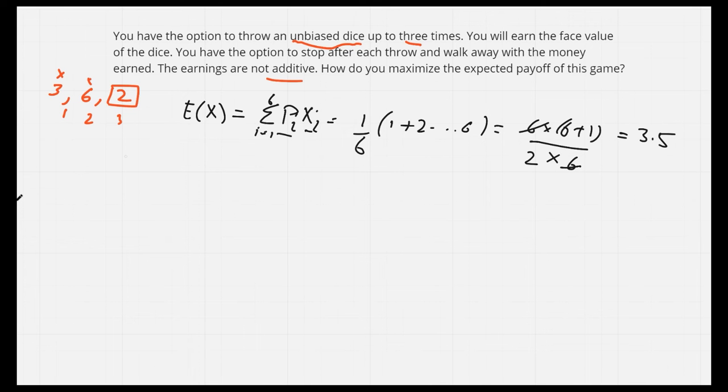Now we know the expected value for one throw. Let's say we have thrown the dice once, so first throw. We can get 1, 2, 3, 4, 5, or 6. Suppose we get 3. How should we decide whether to accept this value or throw dice another time? We can use this expected value to decide. Since in one throw the expected value is 3.5, if I get a value less than that, then I should not settle for it. There are higher chances that I can get a value greater than it.